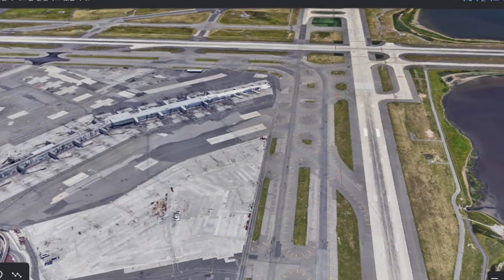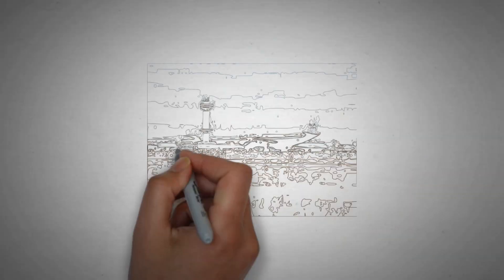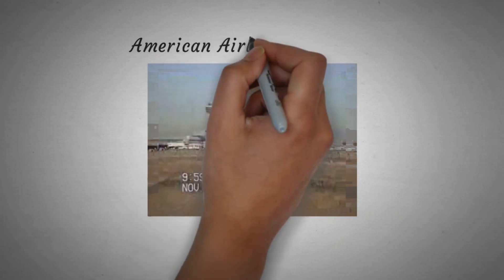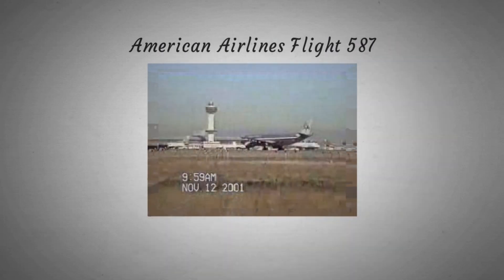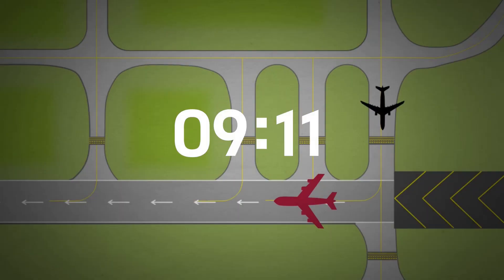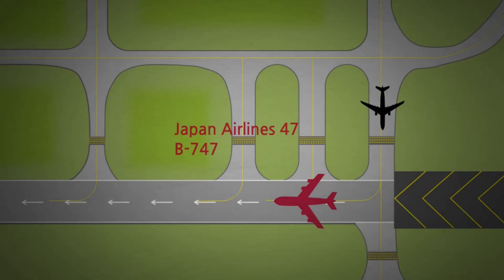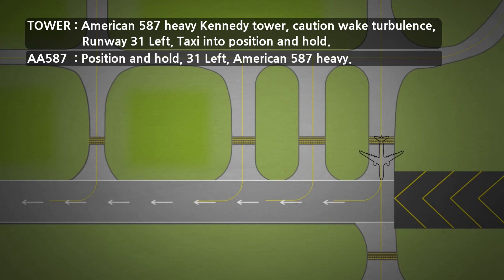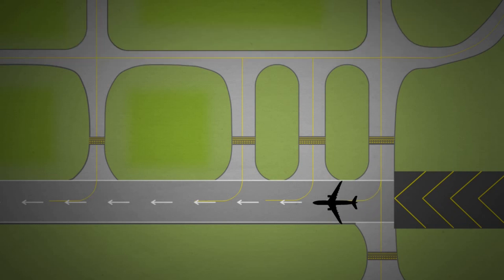At John F. Kennedy International Airport in New York, there were 260 people including passengers and flight attendants on American Airlines 587, an Airbus A300 headed to the Dominican Republic. The tower controller instructed line-up at runway 31 left, with an advisory to be cautious of wake turbulence as a Japan Airlines Boeing 747 had just taken off.